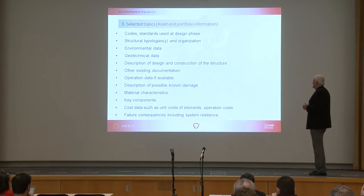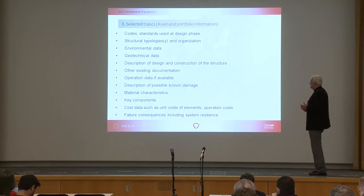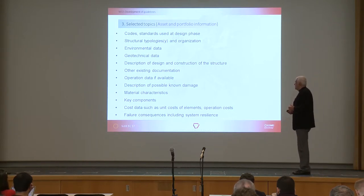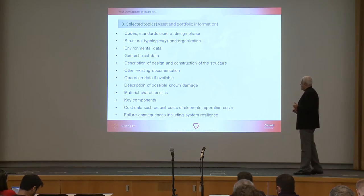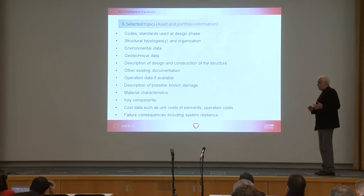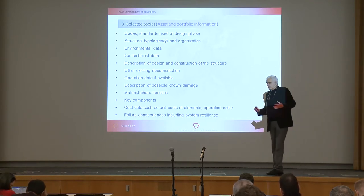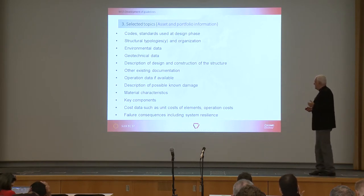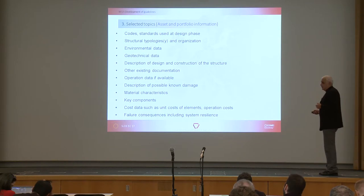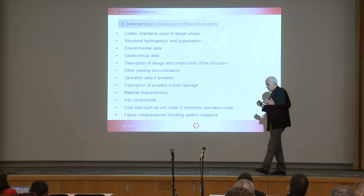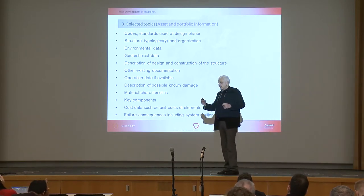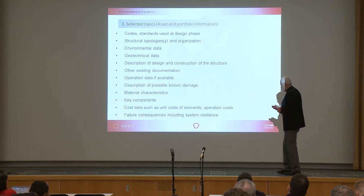Other important selected topics are asset and portfolio information: which standards and codes have been used, structural typology, environmental and geotechnical data, other documentation, and cost data — important for calculating costs of interventions, failure costs, and what can happen in case of partial or total failure. For example, if a bridge closes it can affect the whole system due to detouring and using alternative transportation routes, which leads to extreme consequences.